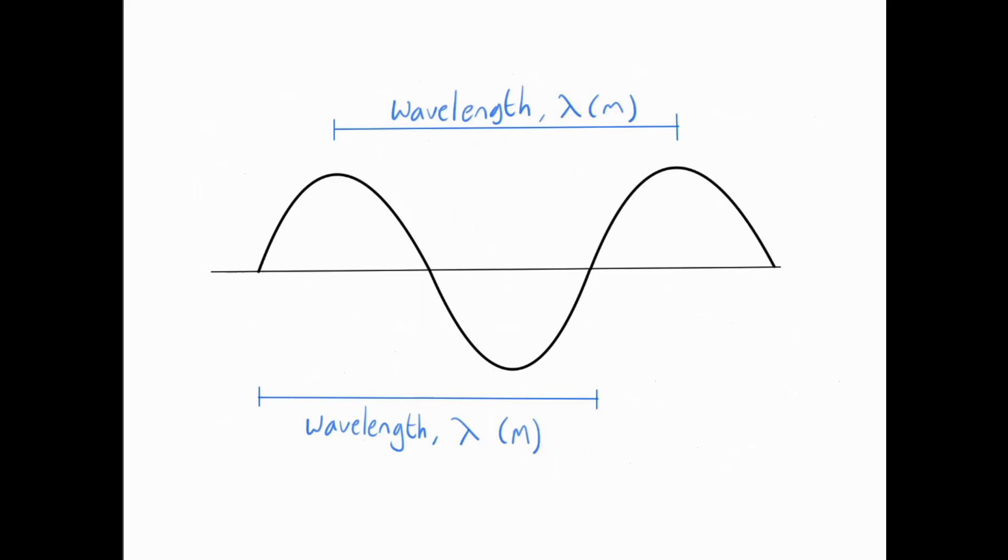Here's a diagram of a transverse wave. Now I've drawn here not just one wave but one and a half waves. It's really important to understand that one wave is one complete cycle. So we go from the start here and we go all the way around until we get to the same place again.